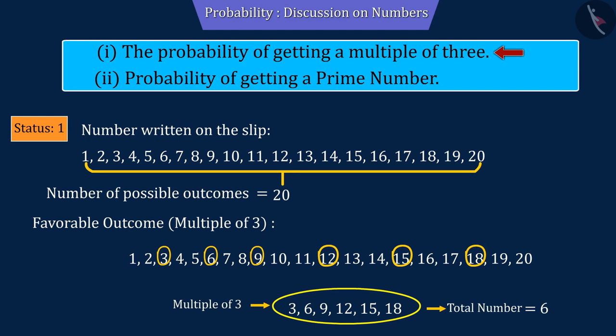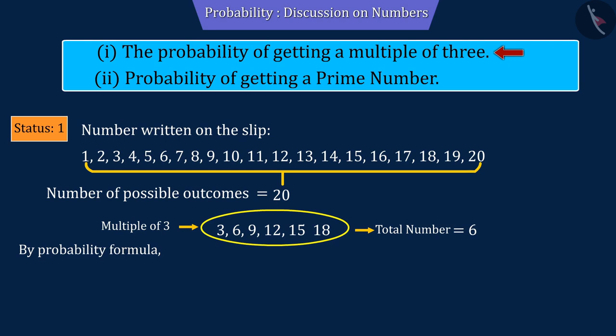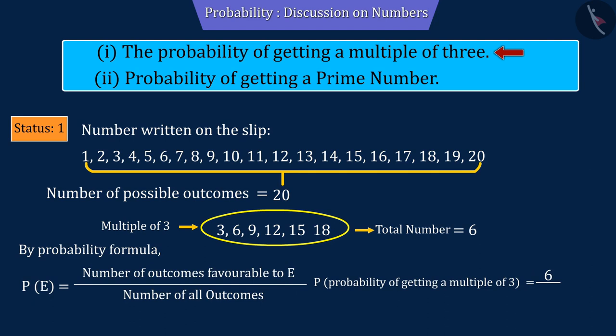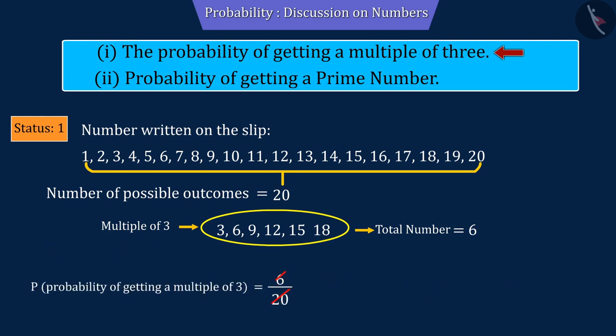Using the probability formula, the number of favorable outcomes of the event is 6 and the number of all possible outcomes is 20. On solving this, the probability of getting a multiple of 3 is 0.3.